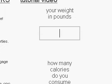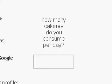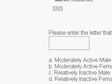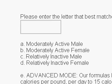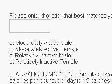For our first example, we'll say we're 200 pounds. Then scroll down. How many calories do you consume per day? We'll say 2,800. The next question asks you to please enter the letter that best matches your profile. For this example, we'll be a moderately active male. So we'll just enter the letter that goes with our profile — all you need is the letter, no period or anything else. We'll go with A, using a small letter.